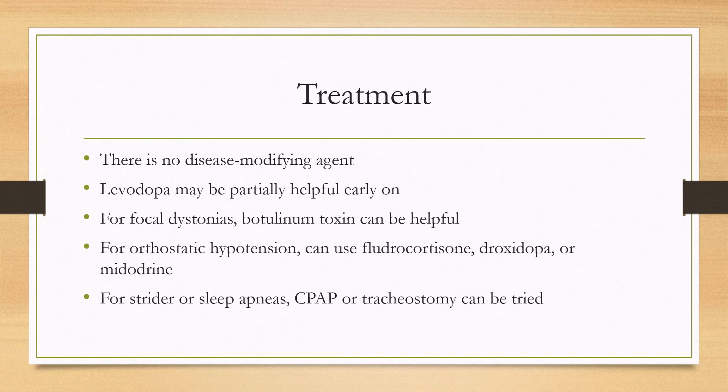For treatment, unfortunately there is no disease-modifying agent. Levodopa can be partially helpful early on for Parkinsonism, but it generally will not work long term. For focal dystonias, botulinum toxin can be helpful. For orthostatic hypotension, the classic medications can be used, including fludrocortisone, droxidopa, or midodrine — with caution in people with supine hypertension. For stridor or sleep apneas, CPAP or tracheostomy can be used and has been helpful for some patients.